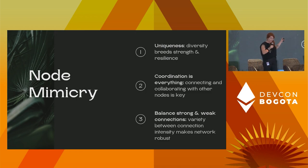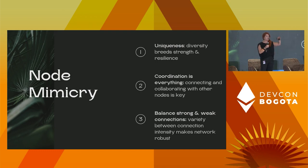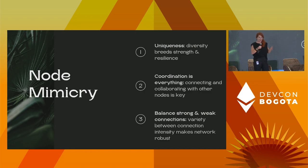Coordination is everything. Connecting and collaborating with other nodes is key. In my mind, authentic self-interest is increasing connection, not competition. Coordination is everything. And then balance: the strong and weak connections. It is okay that some nodes aren't as strongly connected to others, and making sure that we enable the environment for that to be true is very important for us to have a healthy network, a healthy ecosystem.